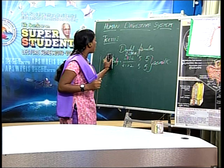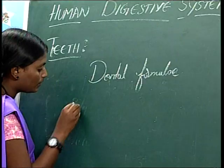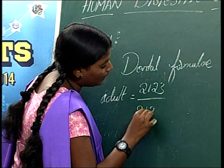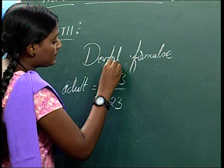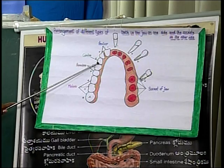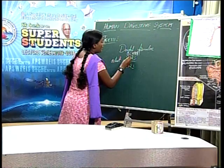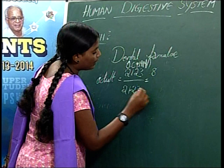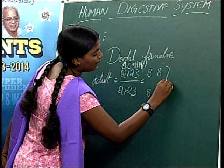The dental formula of adult is 2123/2123: 2 incisors, 1 canine, 2 premolars and 3 molars. In one half, upper part: 2+1+2+3 = 8, and lower part is 8. Total for both sides is 32 teeth. This is known as adult dentition.